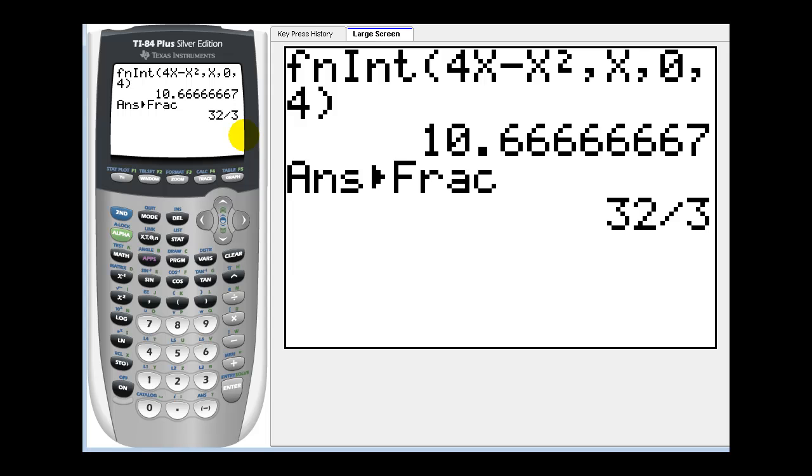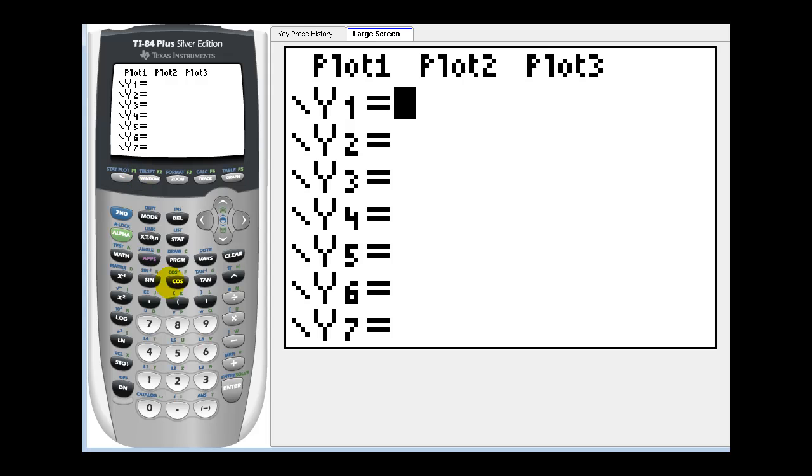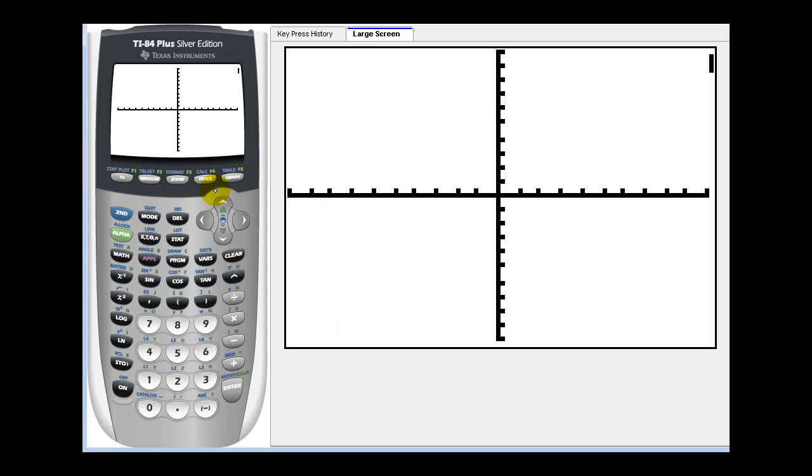The second way to do this would be to look at it graphically. So if we press y equals, type in our function, press graph, adjust the window if needed. This looks okay to me.